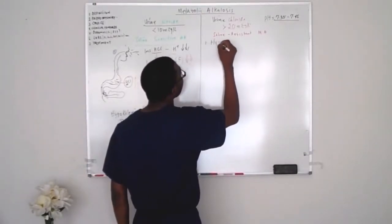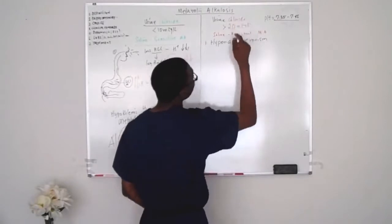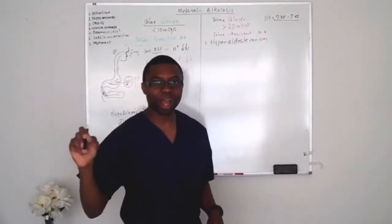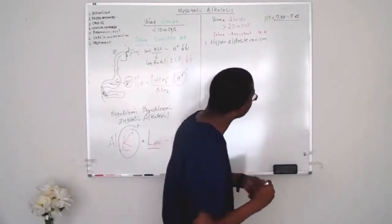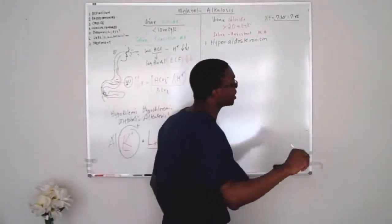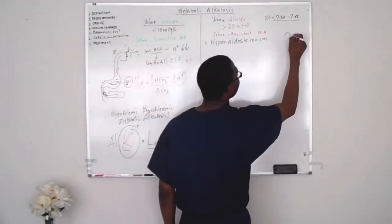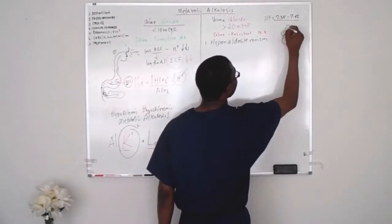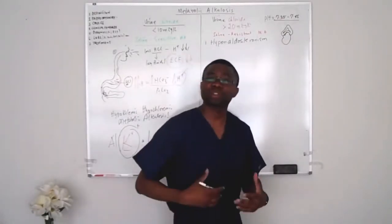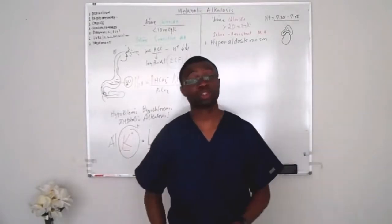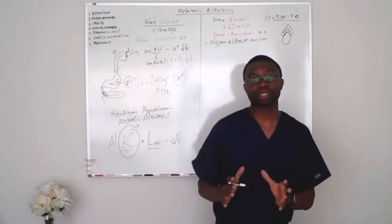The most common cause of saline-resistant metabolic alkalosis is hyperaldosteronism. Where is the hyperaldosteronism coming from? It's coming from the adrenal cortex. We're talking about a problem with the adrenal gland — the adrenal cortex is making too much aldosterone. It could be a bilateral adrenal hyperplasia or it could just be an adrenal adenoma, just spitting out all of this aldosterone.